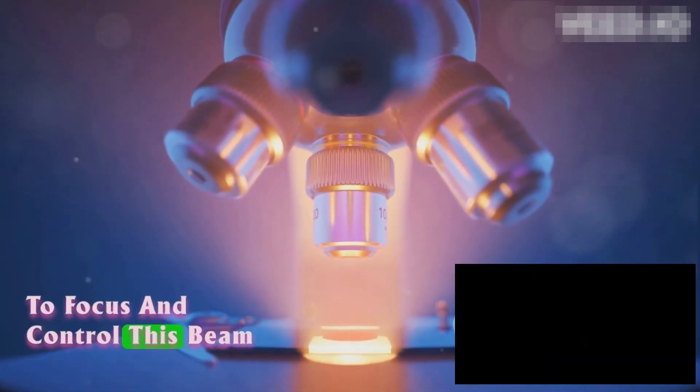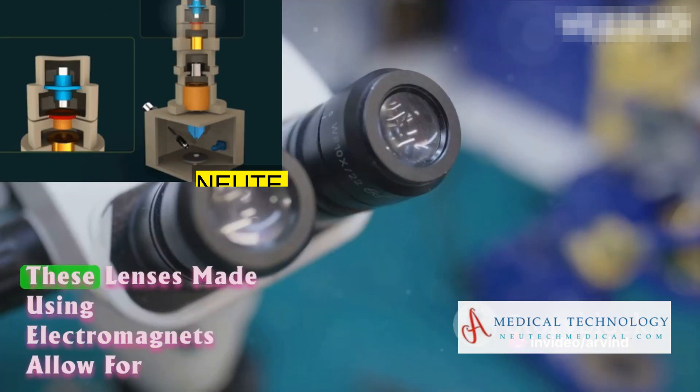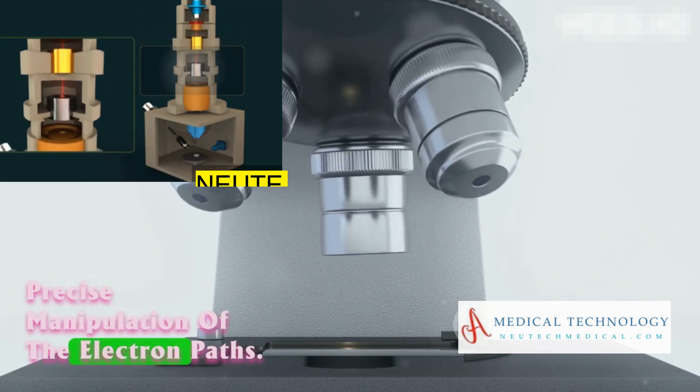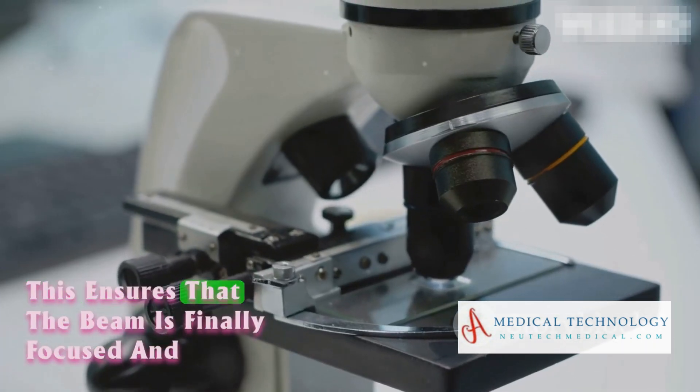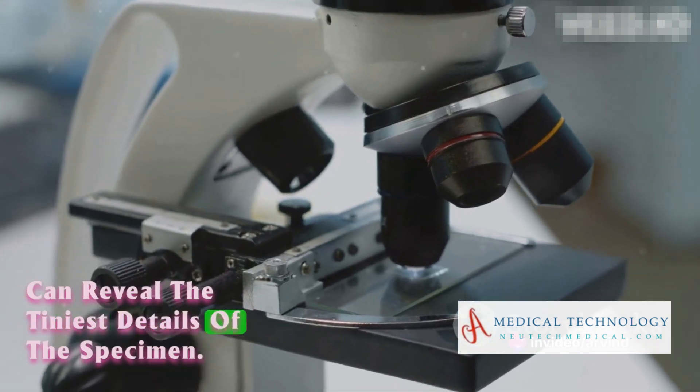To focus and control this beam of electrons, TEMs employ magnetic lenses. These lenses, made using electromagnets, allow for precise manipulation of the electron paths. This ensures that the beam is finely focused and can reveal the tiniest details of the specimen.